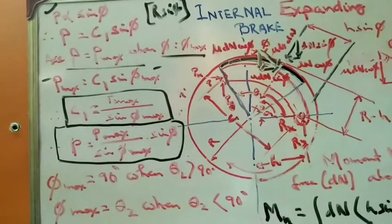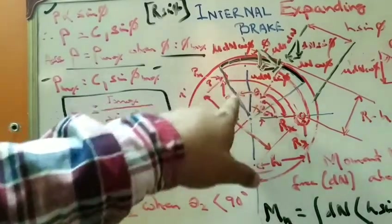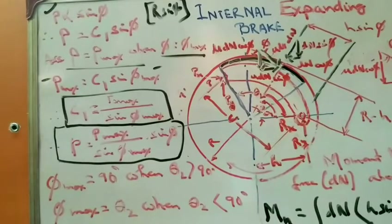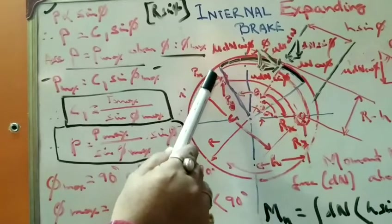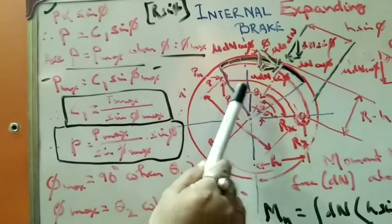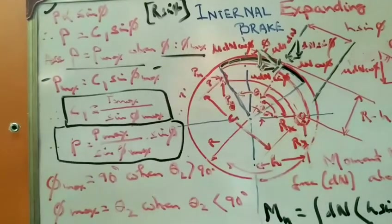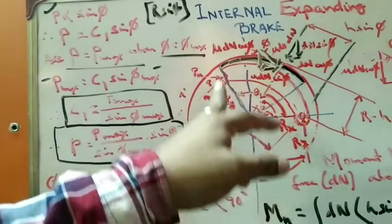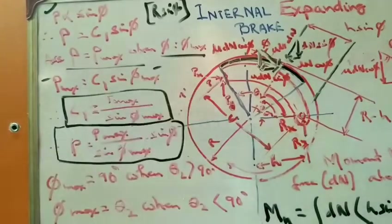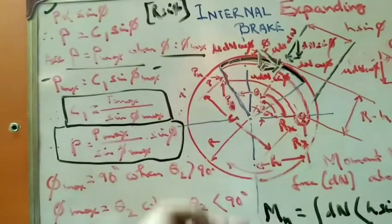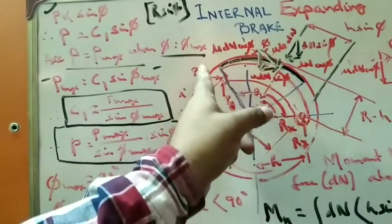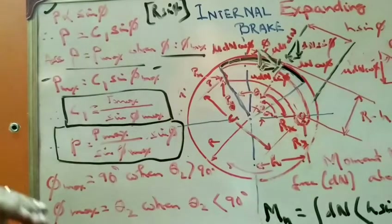When phi_max equals 90 degrees, theta_2 must be greater than 90 degrees, meaning the angle covered by the shoe extends beyond 90 degrees. Theta_2 is the angle at the end of the shoe — the total angular extent of the shoe. So if phi_max is to be 90 degrees, theta_2 must be greater than 90 degrees. When theta_2 is less than 90 degrees, phi_max is taken as equal to theta_2.